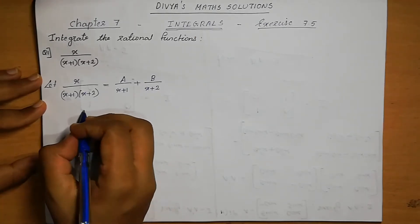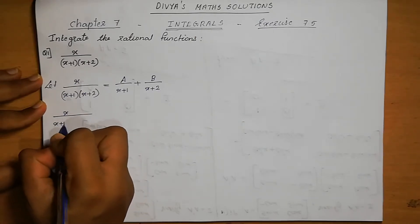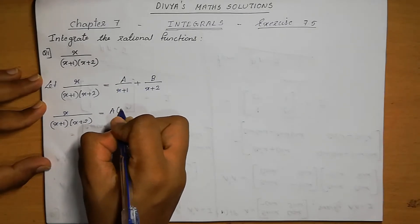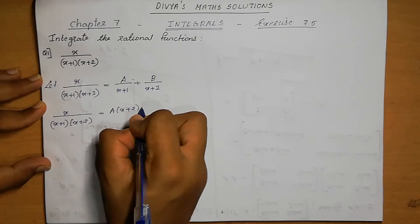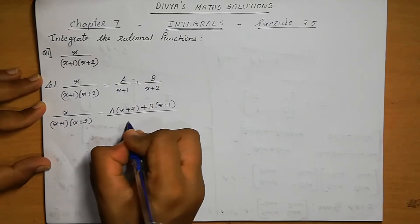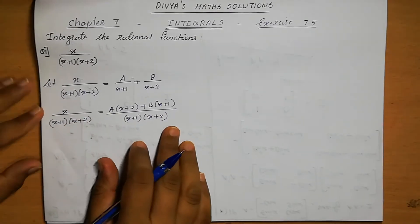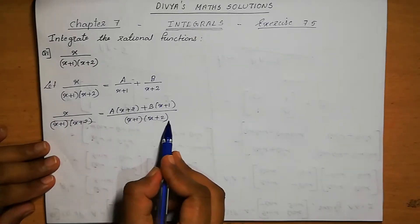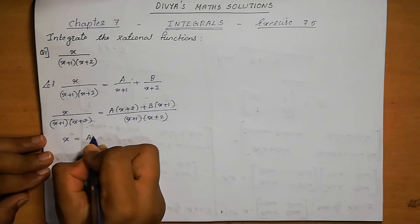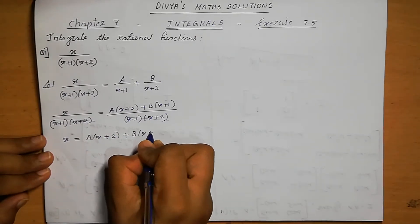Next step, we do cross multiplication. So, x by (x plus 1) into (x plus 2) equals A into (x plus 2) plus B into (x plus 1), the whole divided by (x plus 1) into (x plus 2). The like terms on both sides cancel. So, x equals A into (x plus 2) plus B into (x plus 1).